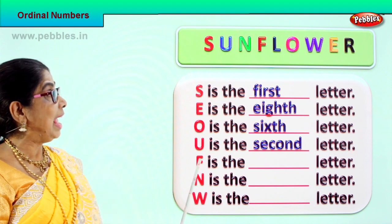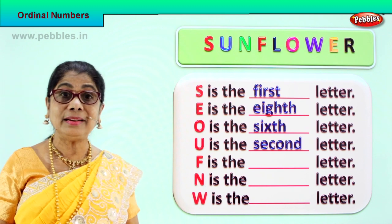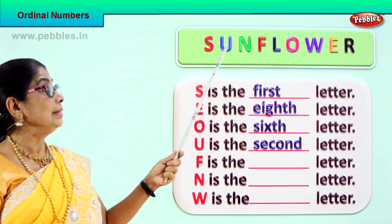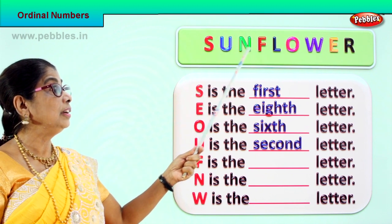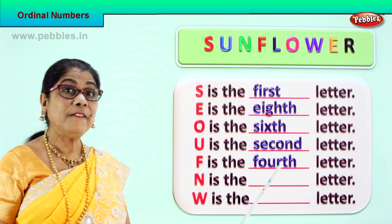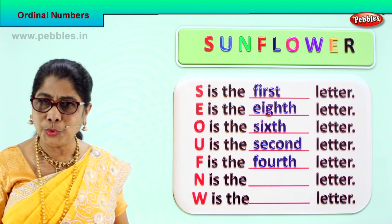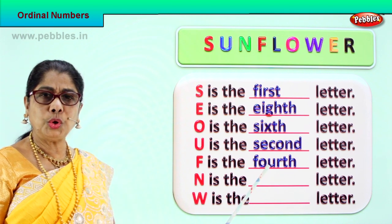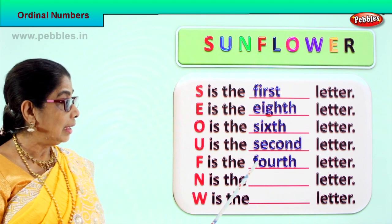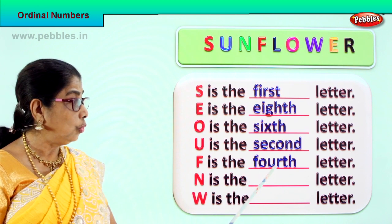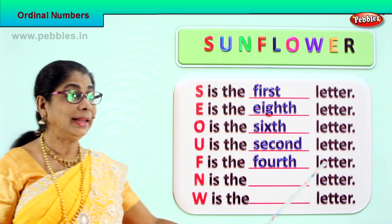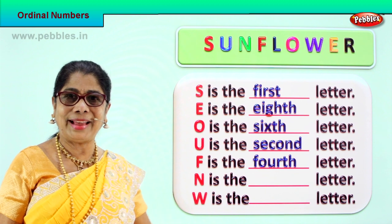Now let's take another letter. In sunflower we have F. F is in what position? First, second, third, fourth. Letter F is the fourth letter. Spell fourth: F-O-U-R-T-H, fourth. Letter F is the fourth letter in sunflower. Good.